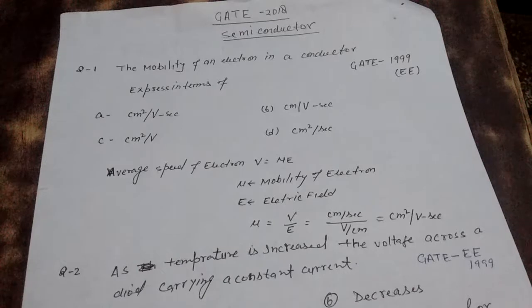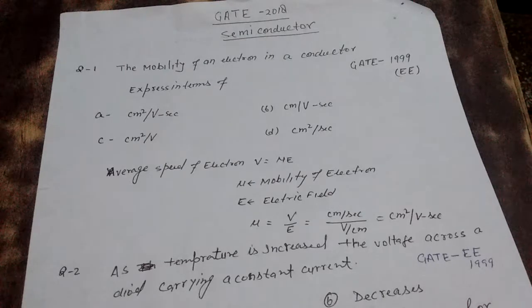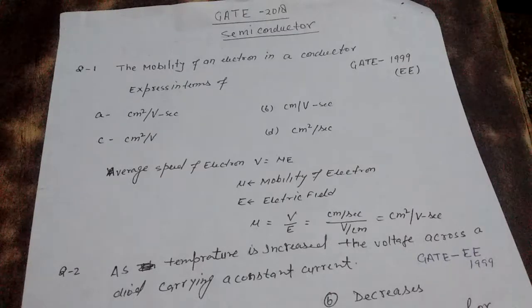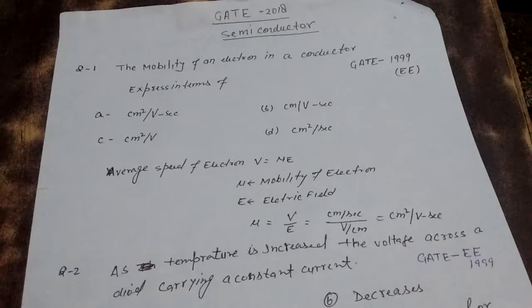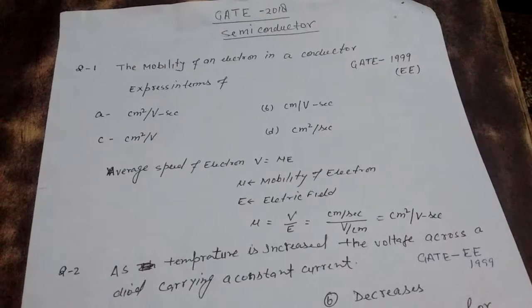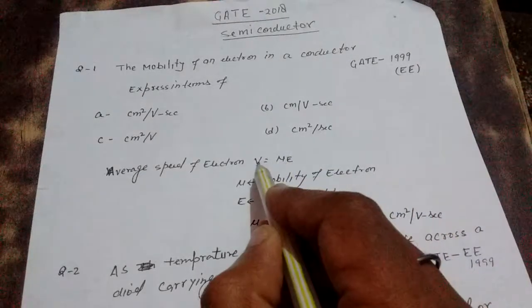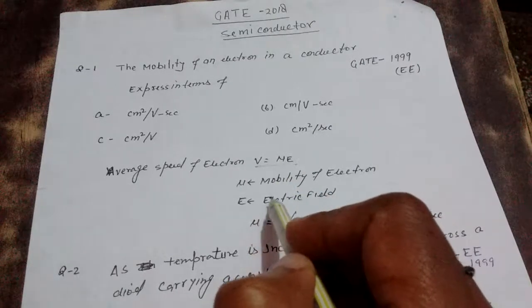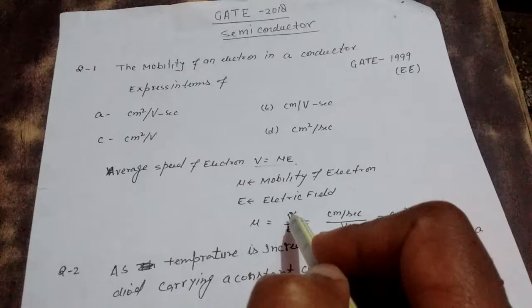Question number one: the mobility of an electron in a conductor. The options are: A) centimeter square per volt second, B) centimeter per volt second, C) centimeter square per volt, D) centimeter square per second. As you know, the average drift speed of electron is V = μE, where μ is the mobility of electron and E is the electric field.